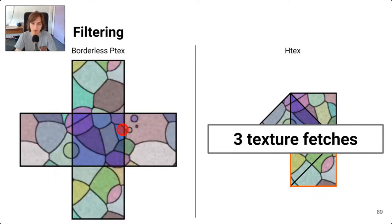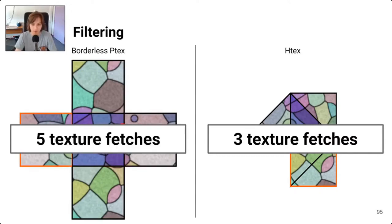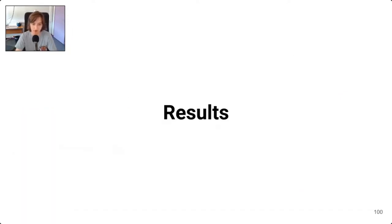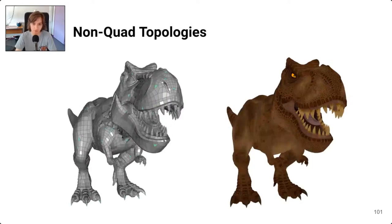Comparing with Borderless Ptex: drawing the quad in blue with a red footprint, Ptex first fetches the center quad texture and then fetches each neighbor's texture. Borderless Ptex requires five texture fetches in total, while HTex only needs three.